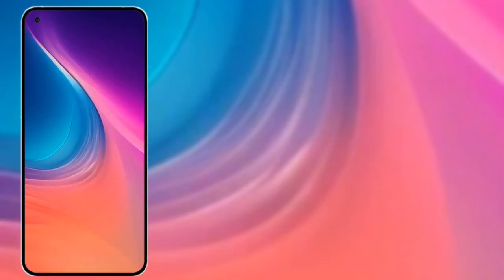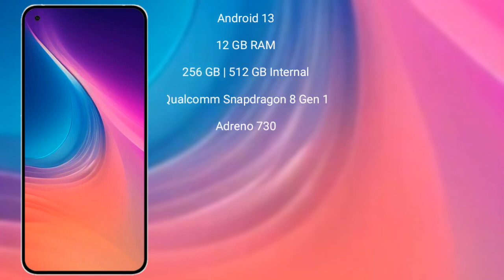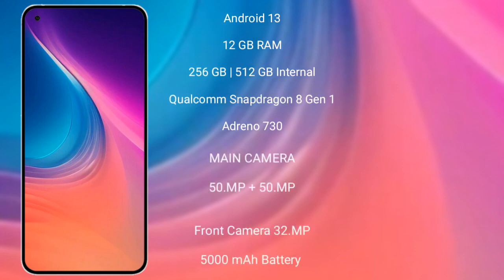Nothing Phone 2 runs on the Android 13 operating system. It comes with 8GB and 12GB RAM and 128GB to 256GB internal storage. It is powered by the Qualcomm Snapdragon 8 Gen 1 processor with Adreno 730 GPU.